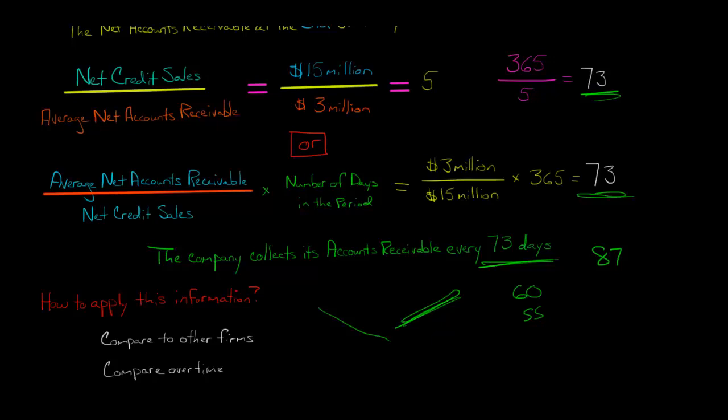It could be that maybe we started extending credit to people who don't have the best credit, and there's a higher percentage of them not paying. Or it could be that maybe the economy is in a recession, or there's some problems that happen to our customers, that our existing customers just aren't able to pay, or they're delaying payment because they're having financial problems.